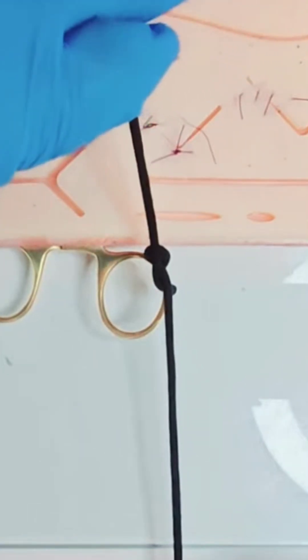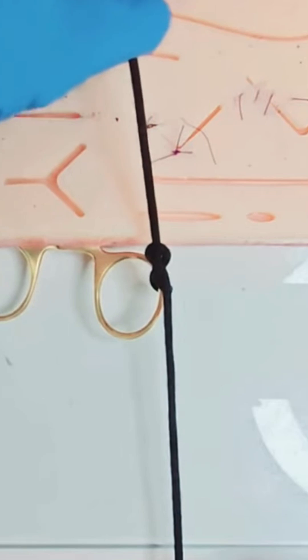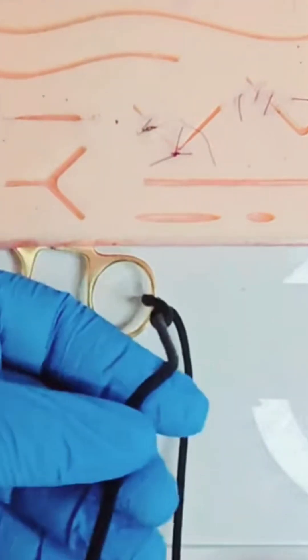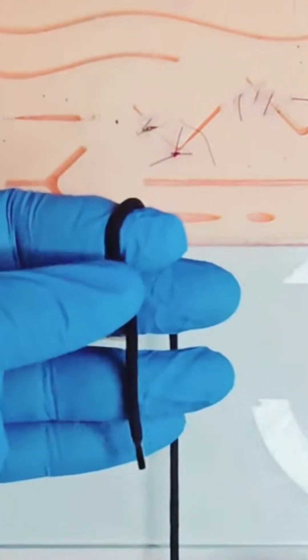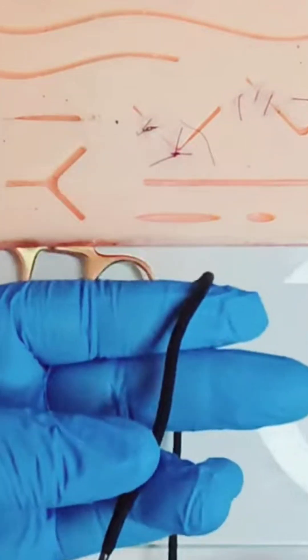Grasp the short end between index and thumb and supinate your hand toward you. Slide your fingers down the thread to grasp it between thumb and ring finger.